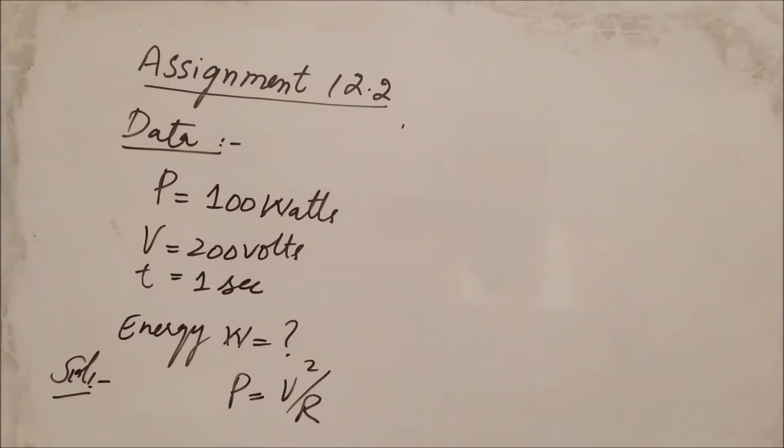We need to find the energy consumed by these two parallel pieces of coil. First, we will use the formula of electrical power, which is P = V²/R, because we have the values of V and P.